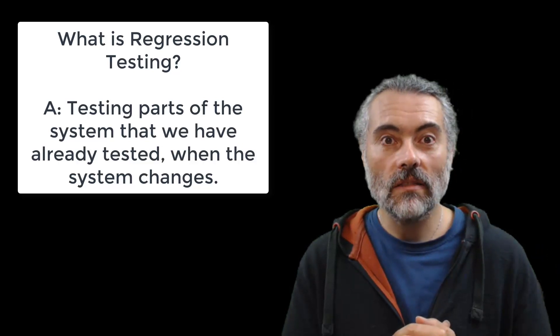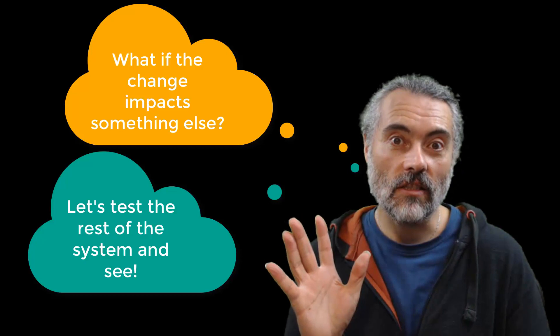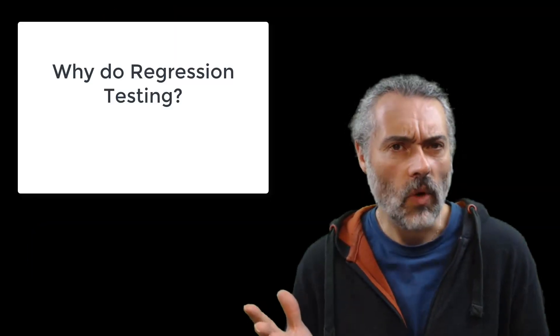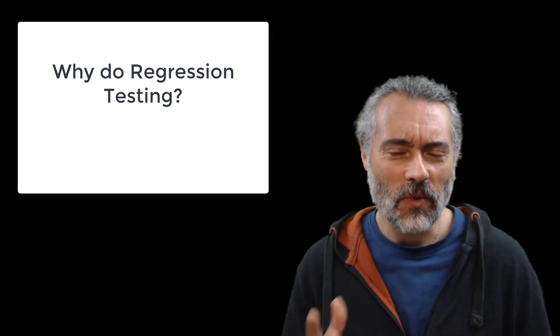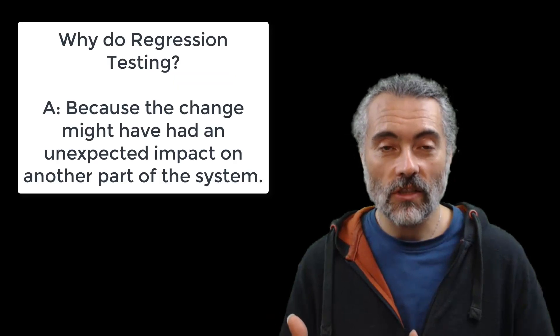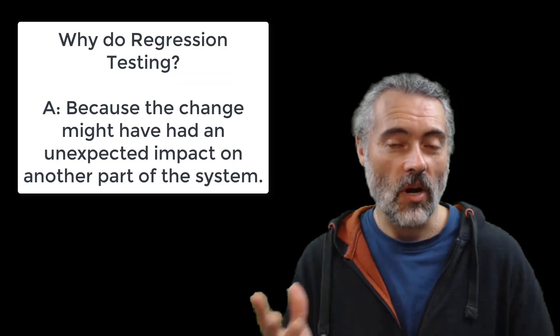Then we go, well you know something else might happen, so let's test the rest of the system. And that rest of the system is regression testing. So why would we do that? Why we've just tested the change, why would we do regression testing? Because the change might have had an unexpected impact on another part of the system.